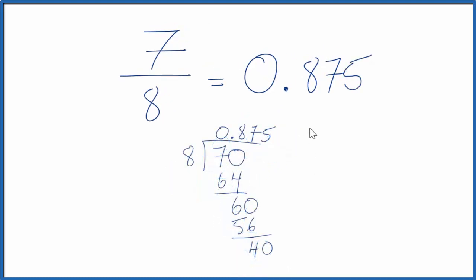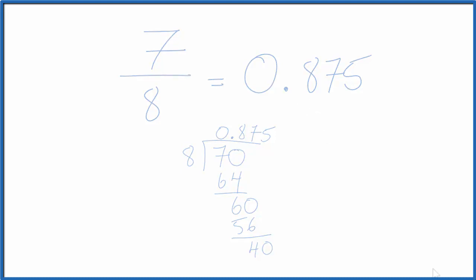This is Dr. B converting seven eighths to a decimal. It's 0.875. Thanks for watching. We'll see you next time.